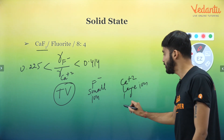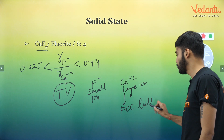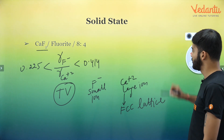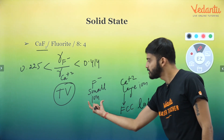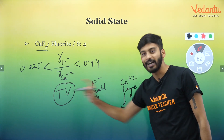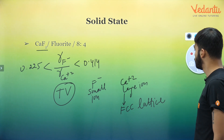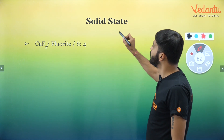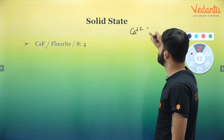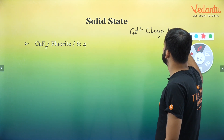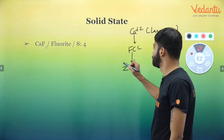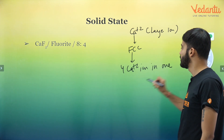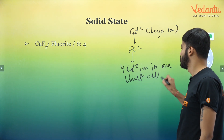So importantly, Ca²⁺ will crystallize into an FCC lattice. Since it is the large ion, it will crystallize in an FCC fashion. There will be 4 Ca²⁺ ions in one unit cell.